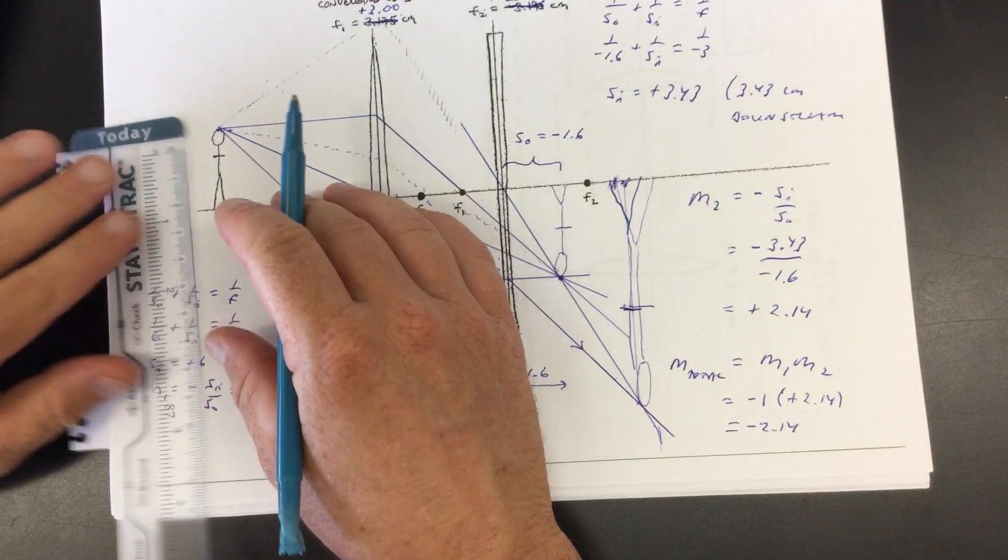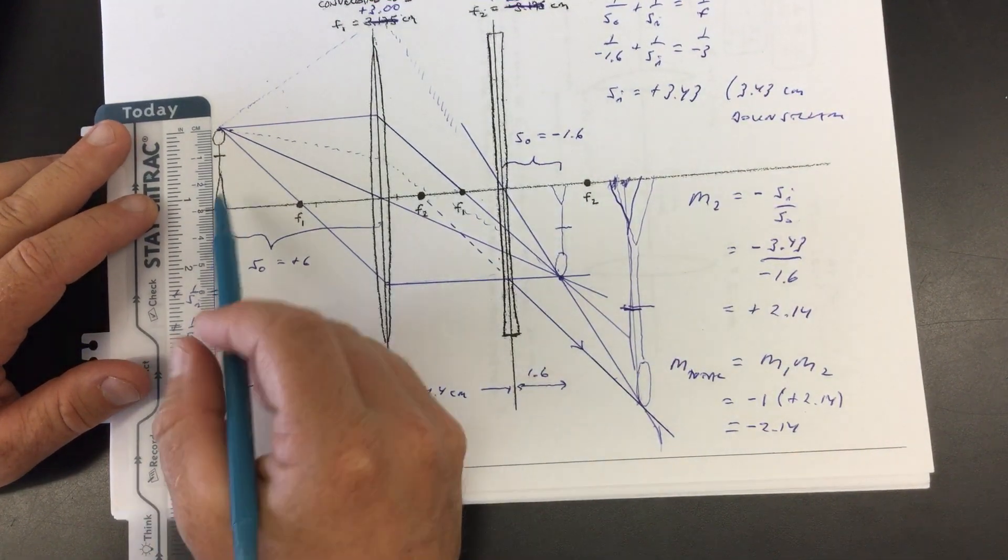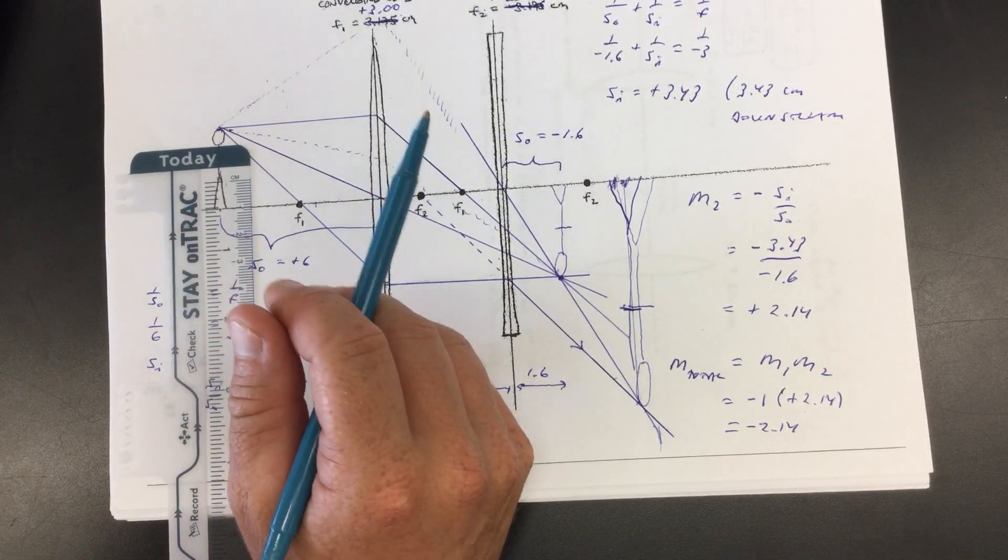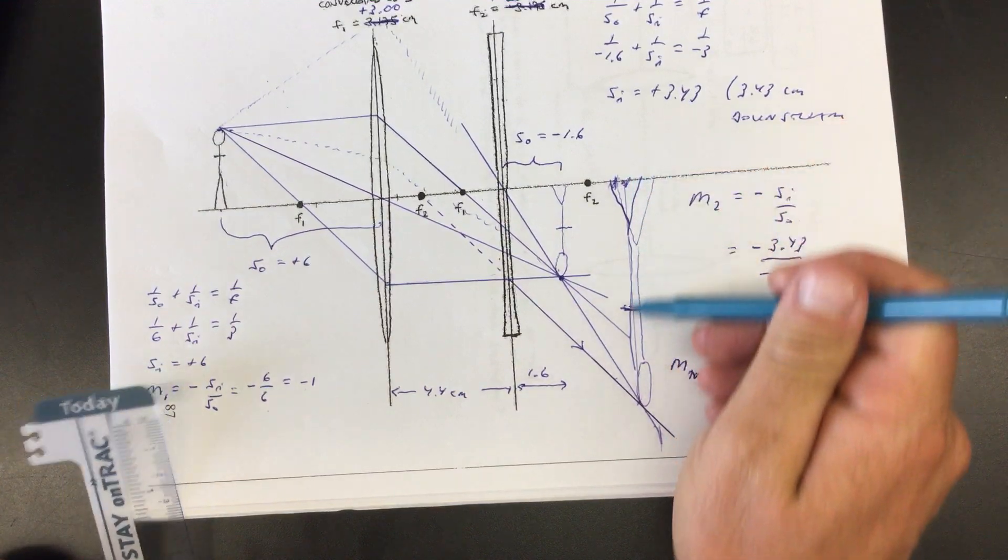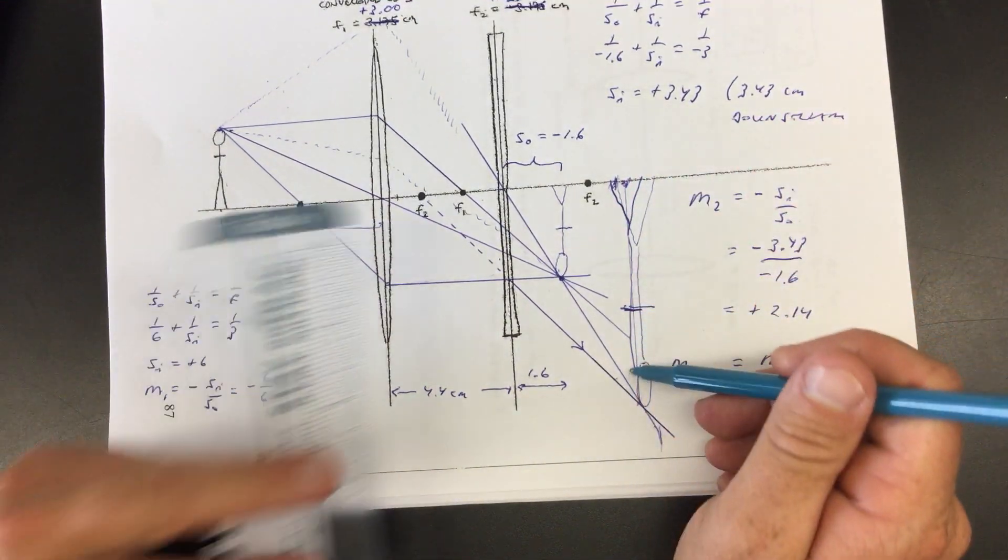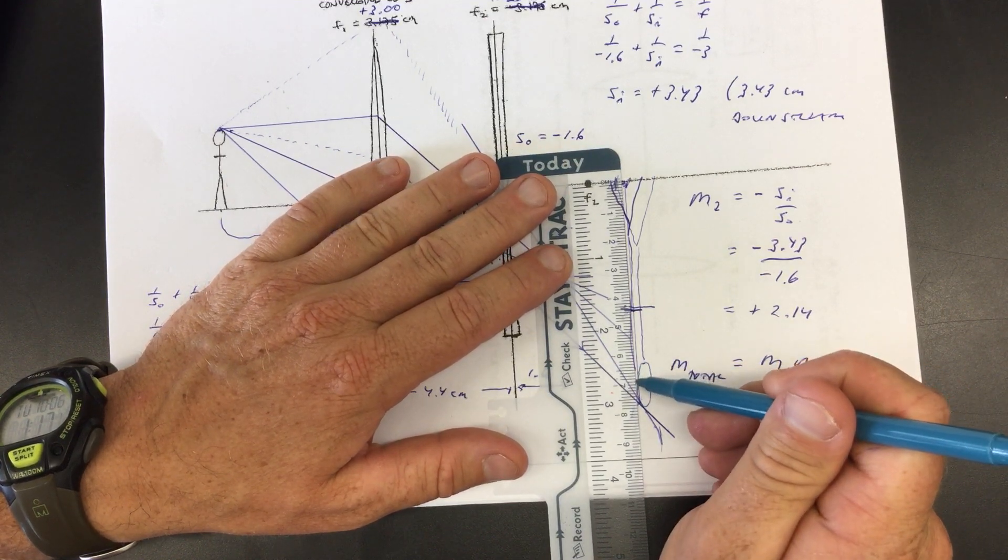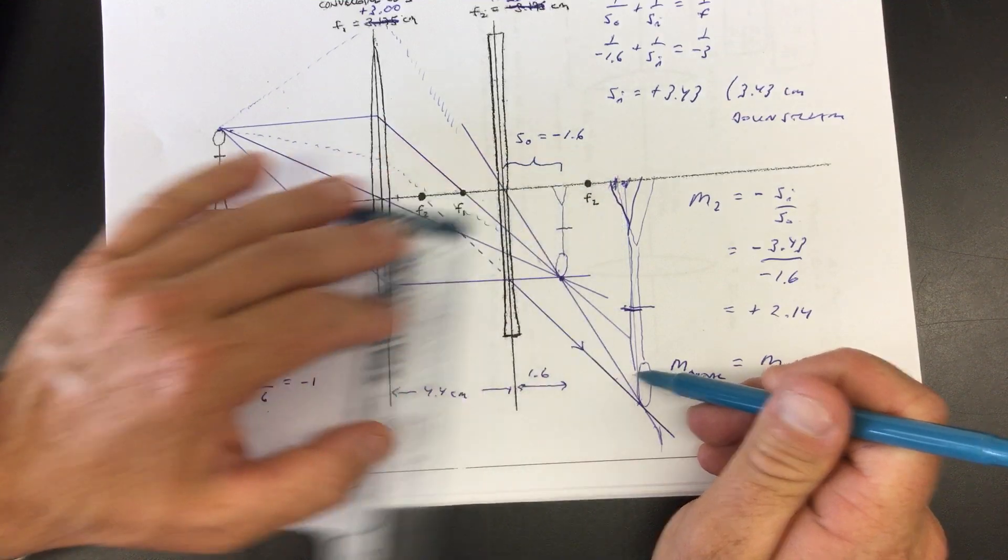And then this thing should have blown up by a factor of like 2.14. So what this looks to be about three centimeters tall. So if I say three times 2.14 to see how big this should have been, this ultimately should have been like 6.4 centimeters tall. So again, just, I'm just evaluating the quality of my drawing. It should have been only about maybe 6.4, maybe this tall.